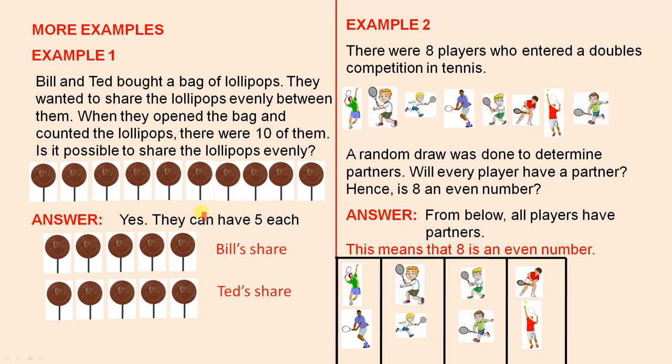The answer? Yes, they can have five each. Okay, so here's Bill's share, one, two, three, four, five. Here's Ted's share, one, two, three, four, five. So they divide them into two groups and each group has five lollipops. Nothing left over. So that proves that ten is an even number.